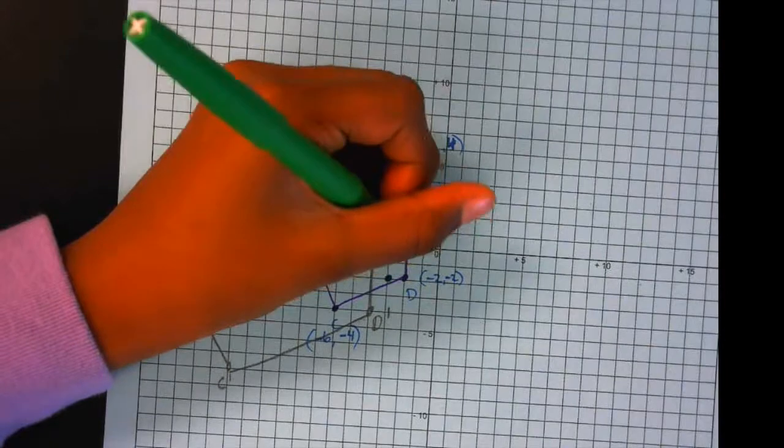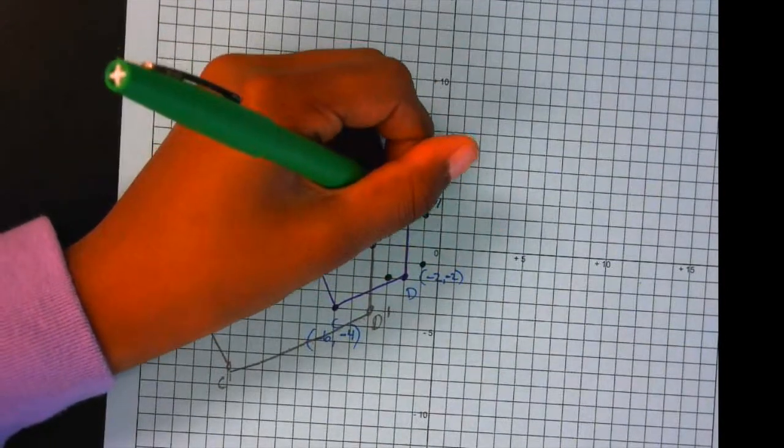And for D it is negative two, so it would be one one. And then I connected the lines.